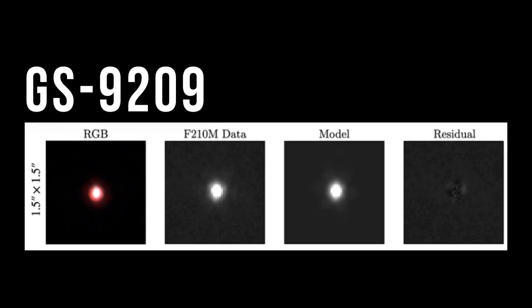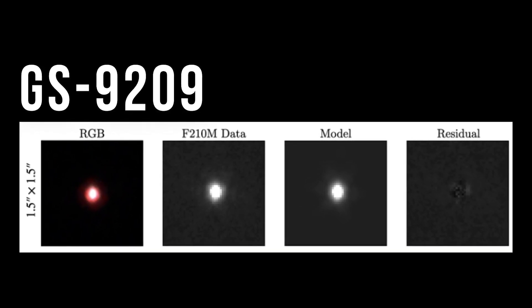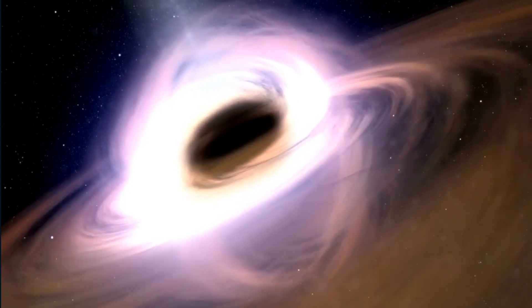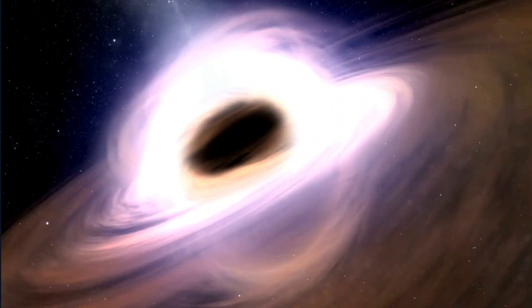The question remains, why did GS9209's star-forming phase suddenly end? It was discovered that an actively feeding black hole was the cause.